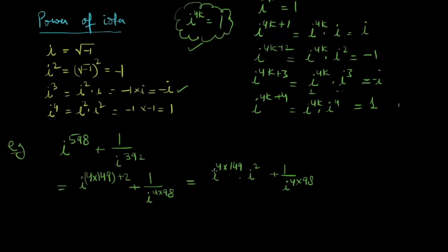iota to the power 4 into k. 4 into k is 1, and iota square is minus 1. iota to the 4, to the power 149. iota to the 4 is 1.